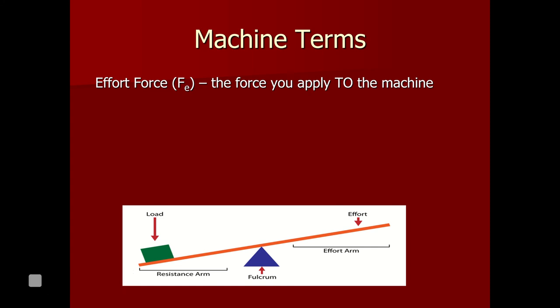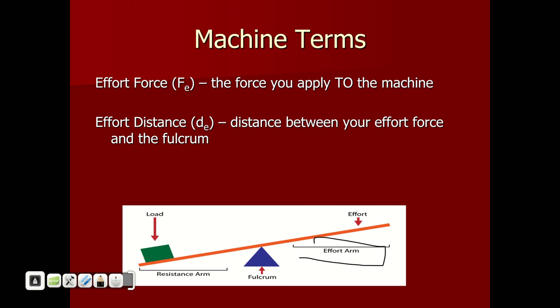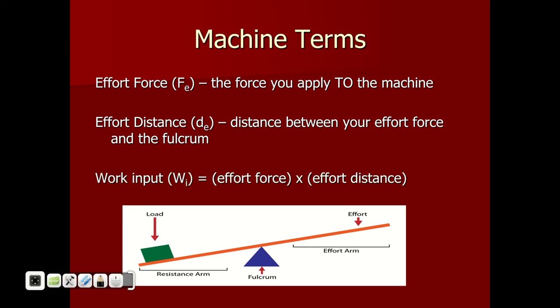Some key terms: we have the effort force (F_E), which is the force that you apply to the machine. We have the effort distance (D_E), which is the distance between your effort force and the fulcrum — sometimes called the effort arm. Together, effort force times effort distance equals the work input into the machine itself.